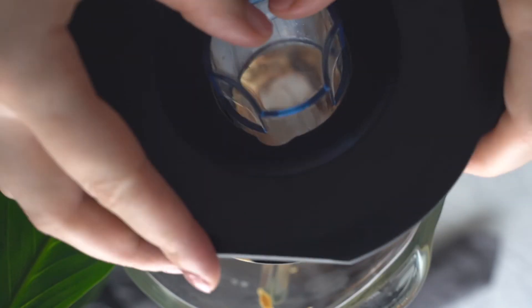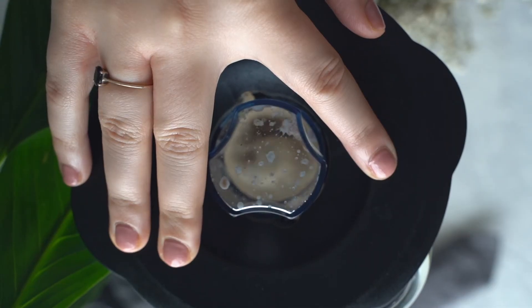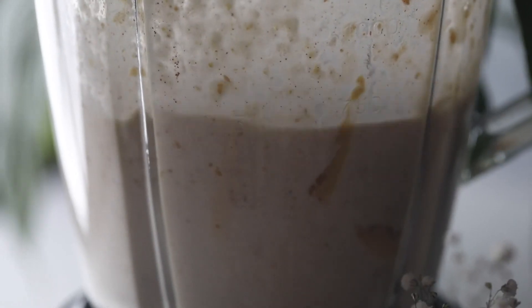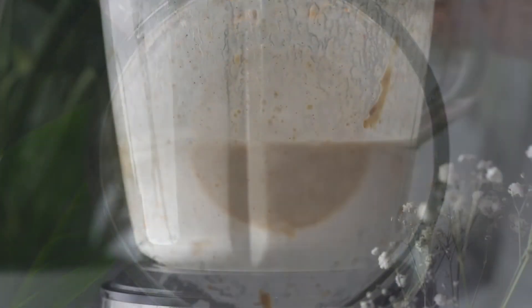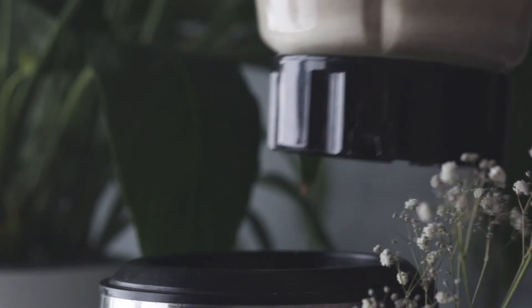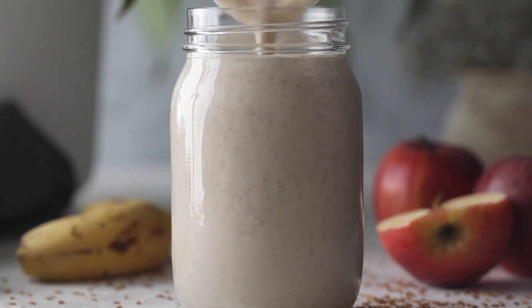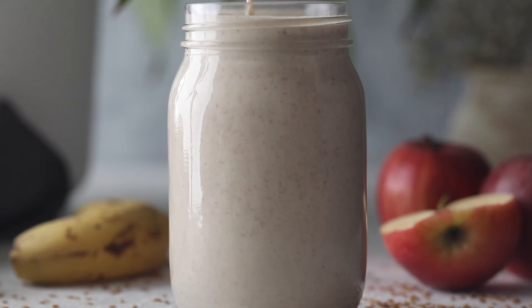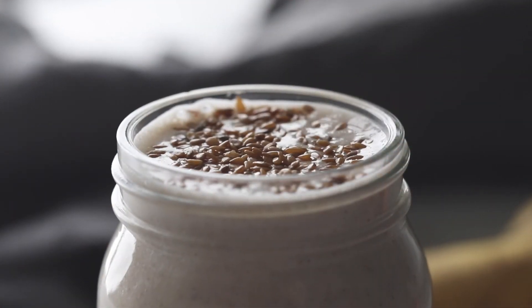Now cover your blender and blend until it's all smooth. Pour the smoothie into a glass—make sure it's tall enough and big enough, as it's quite a bit of food. Top it all up with flaxseeds because they're delicious and really add to the smoothie.